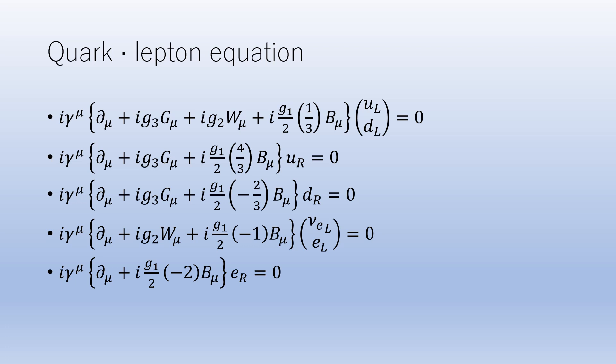We write equations for first-generation quarks and leptons. Exactly the same equation holds for second- and third-generation quarks and leptons. The color subscripts for the U and D quarks are omitted here to avoid complications.